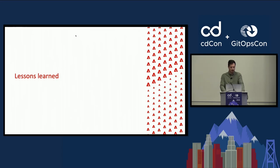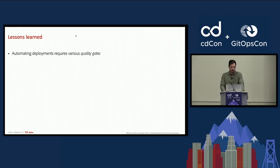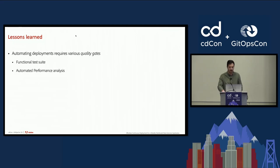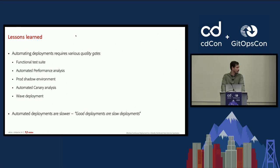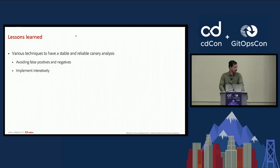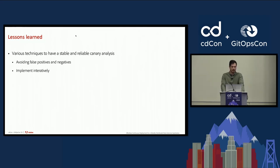It has been a long journey, so let's have a quick final recap. Completely automating deployments requires various quality gates to ensure the same or even higher safety standard as manual ones. We've seen techniques such as having a functional test suite and performance analysis to automatically evaluate functional and non-functional aspects with synthetic traffic, having a production shadow environment to validate before hitting production, and in-release techniques like automated canary analysis and wave deployment to validate releases against live traffic. One of the major challenges was stabilizing canary analysis, and our recommendation is to implement the techniques iteratively and on a per-need basis.